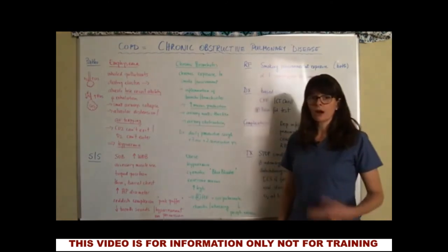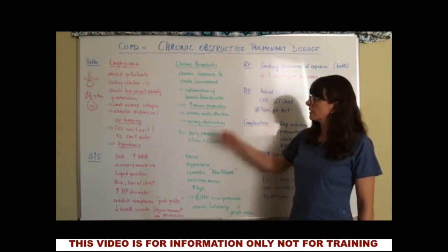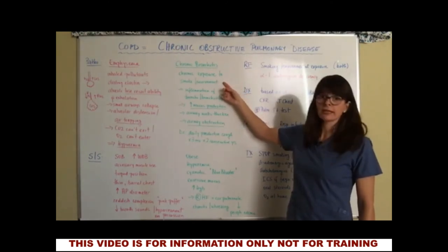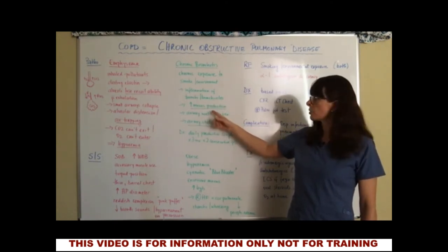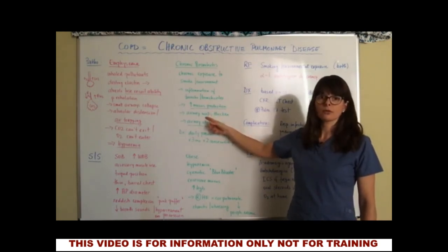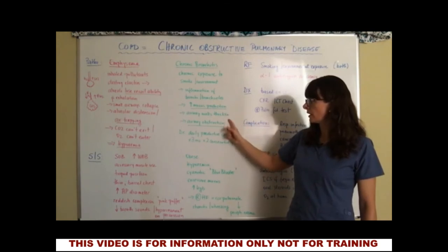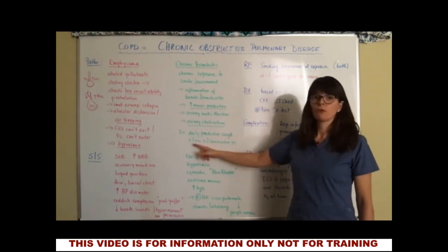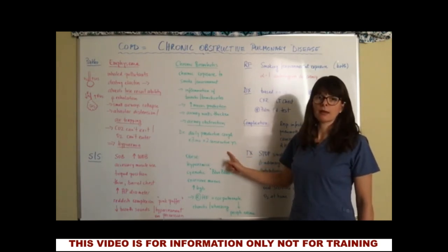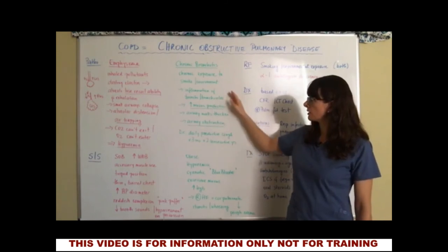In comparison, chronic bronchitis is also a chronic obstructive pulmonary disorder, but it works differently. The causative mechanism, again, is chronic exposure to smoke or the environment. In chronic bronchitis, the bronchi and bronchioles get inflamed. This inflammation causes an increase in mucus production, and the airway walls thicken, causing airway obstruction. A chronic bronchitis diagnosis is usually made if there's a daily productive cough for three months for two consecutive years.